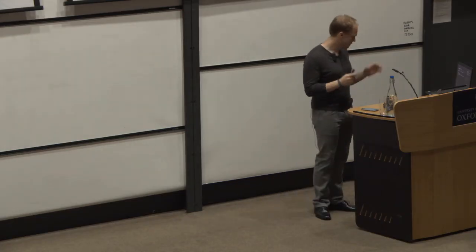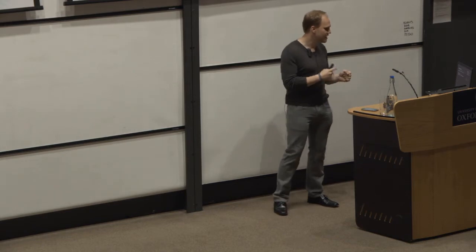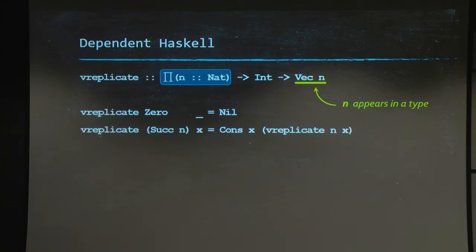But notice, to understand where things break right now, let's have a look at this n over here. In particular, n appears in the return type of the function. And in current GHC, everything that is a type or that appears in a type has to be erased.